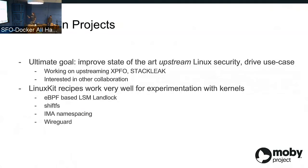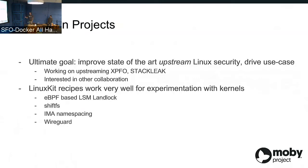There's also ShiftFS, which I'll show you in a second. We've been playing around with namespacing IMA - the integrity management architecture - a way to ensure your containers will only open files that have been signed, so you can remotely attest that their contents haven't been tampered with. WireGuard is a VPN-like project. These projects are all not in the kernel today, but what we'd like to do is encourage the kernel community to merge them by exposing them to many people.